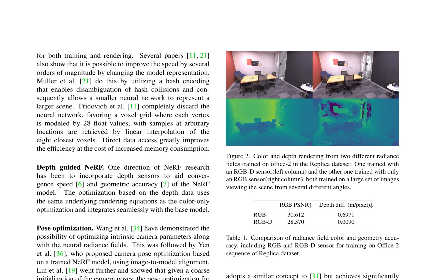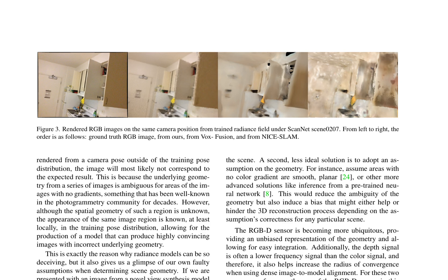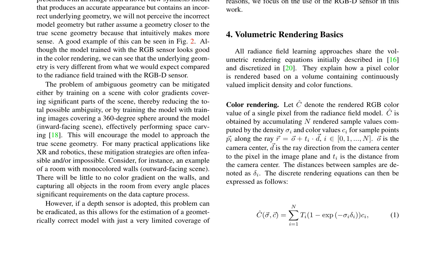The paper discusses various aspects of NeRF, including its applications in novel view synthesis, 3D reconstruction, and volumetric rendering. It highlights the importance of depth sensors in improving the efficiency and accuracy of NeRF models. The paper emphasizes the difference between novel view synthesis and 3D reconstruction: while both aim to recreate scene representations, novel view synthesis concentrates on the appearance of the scene, whereas 3D reconstruction targets the geometry. The paper also discusses limitations of NeRF models in scenes with ambiguous geometry, proposing strategies such as training on scenes with color gradients or using depth sensors, and concludes by detailing volumetric rendering basics.